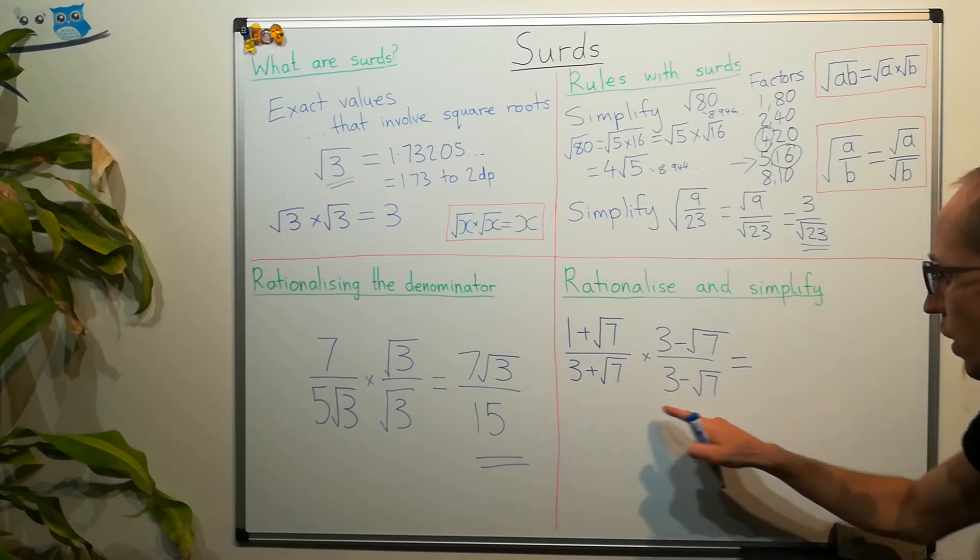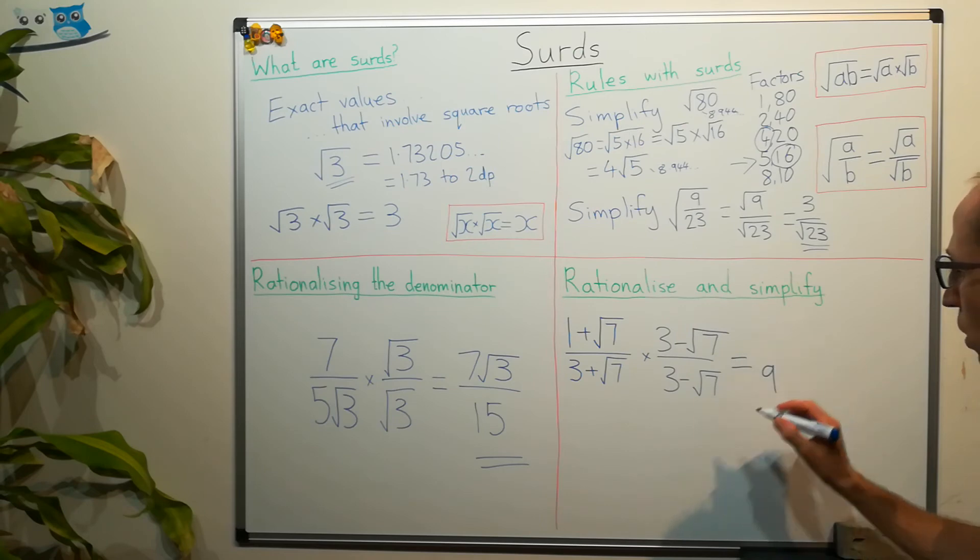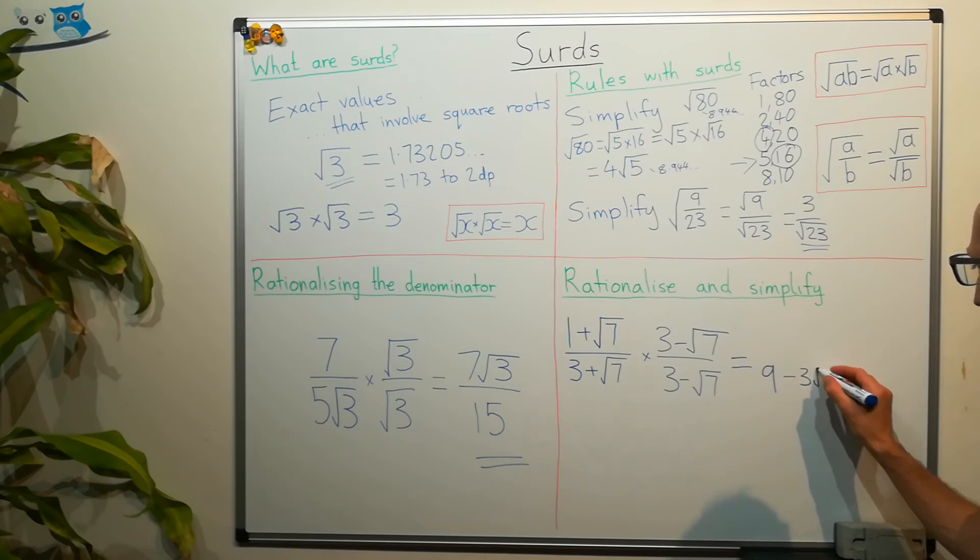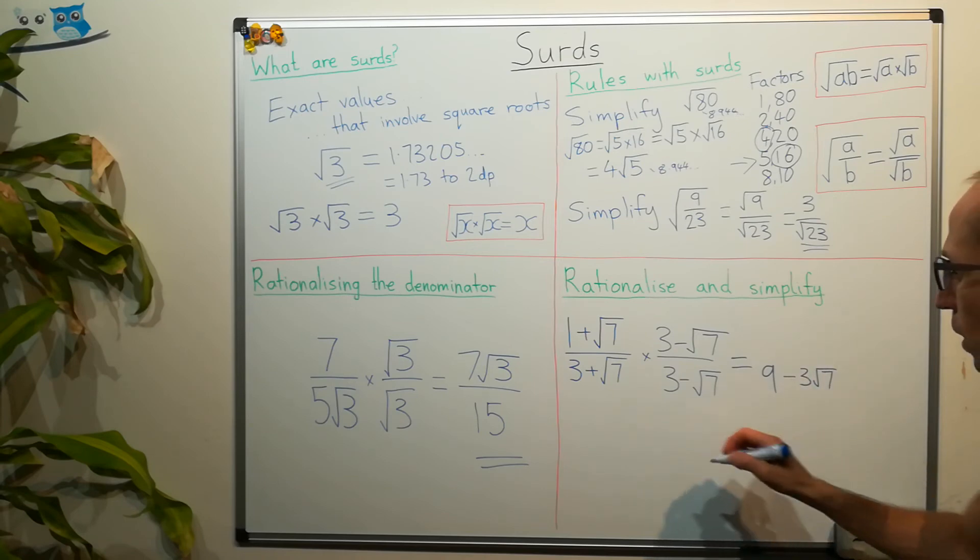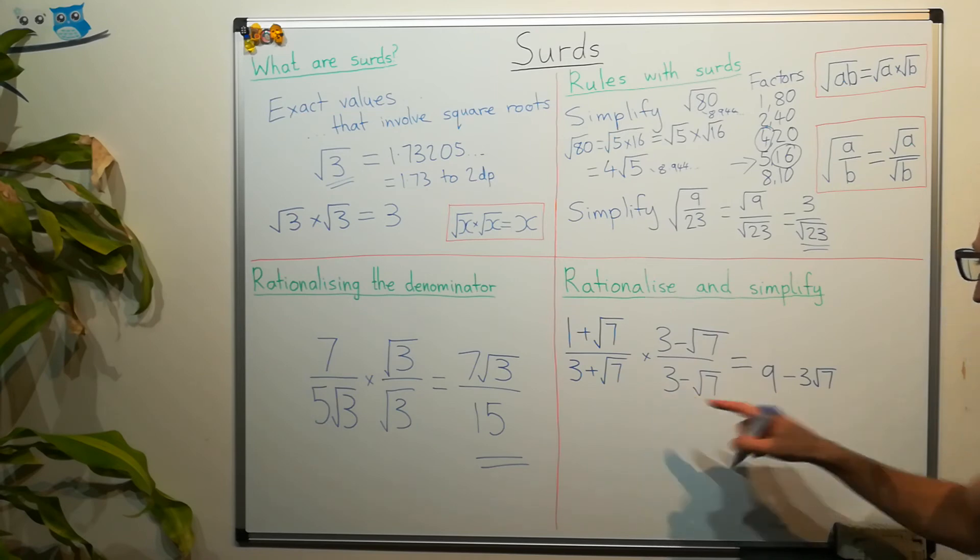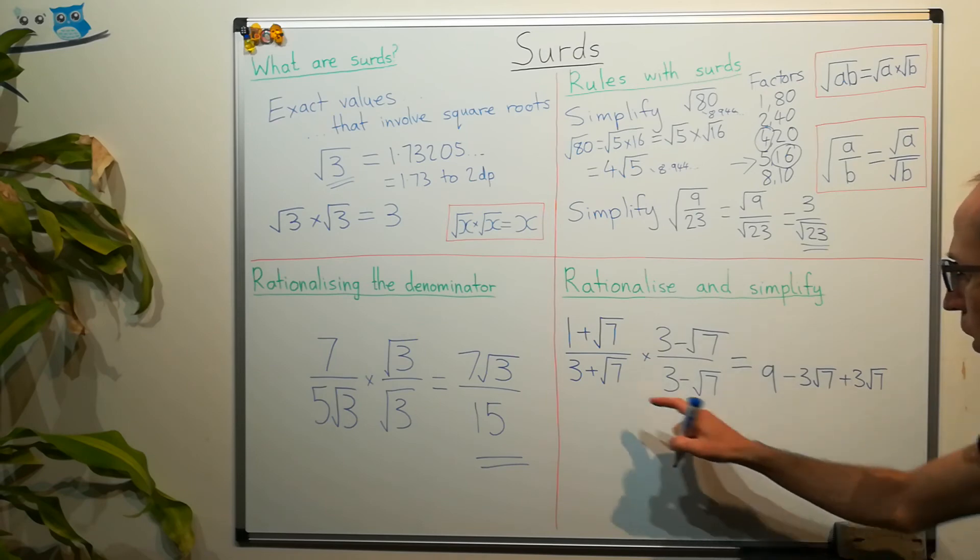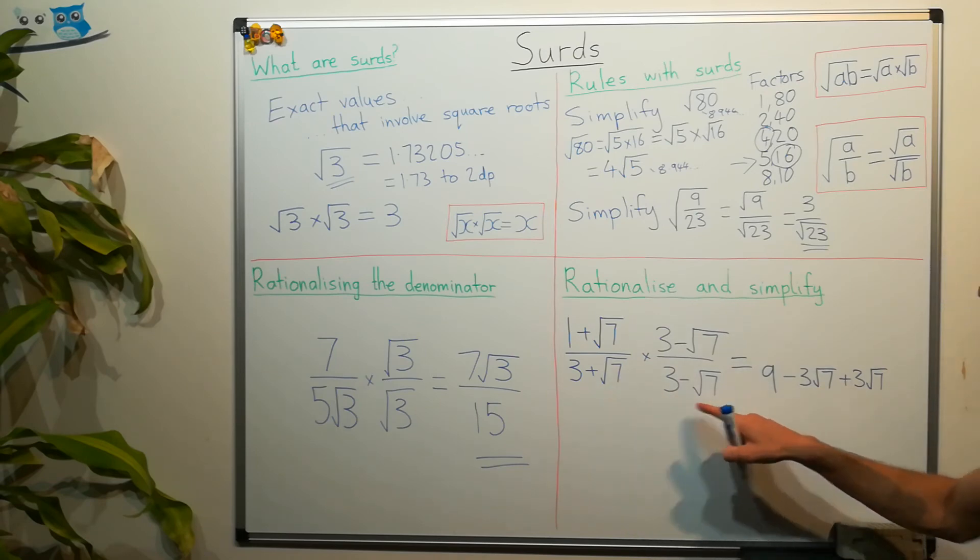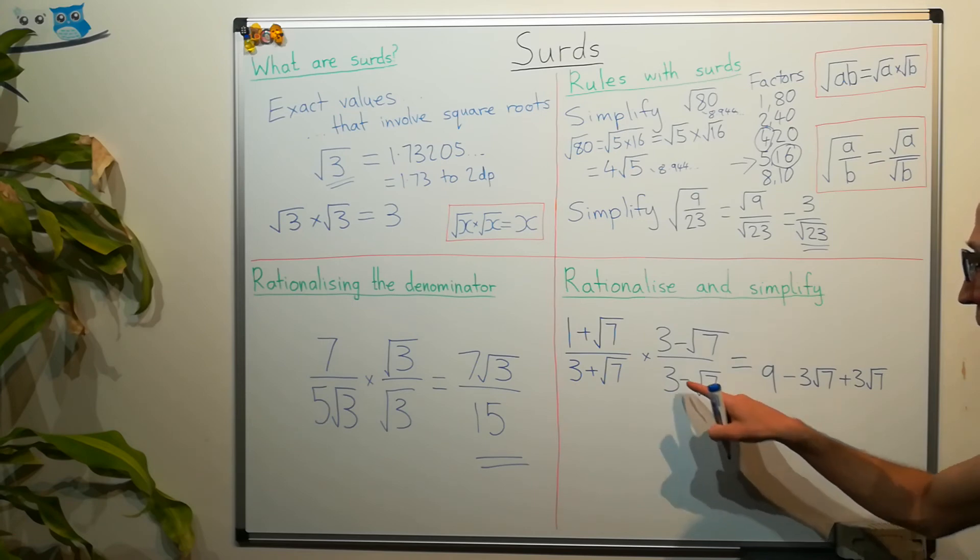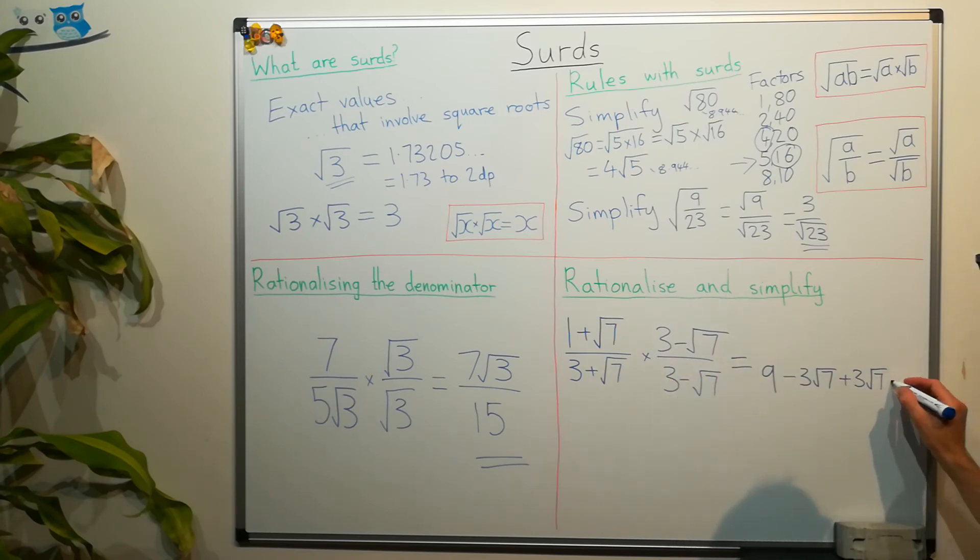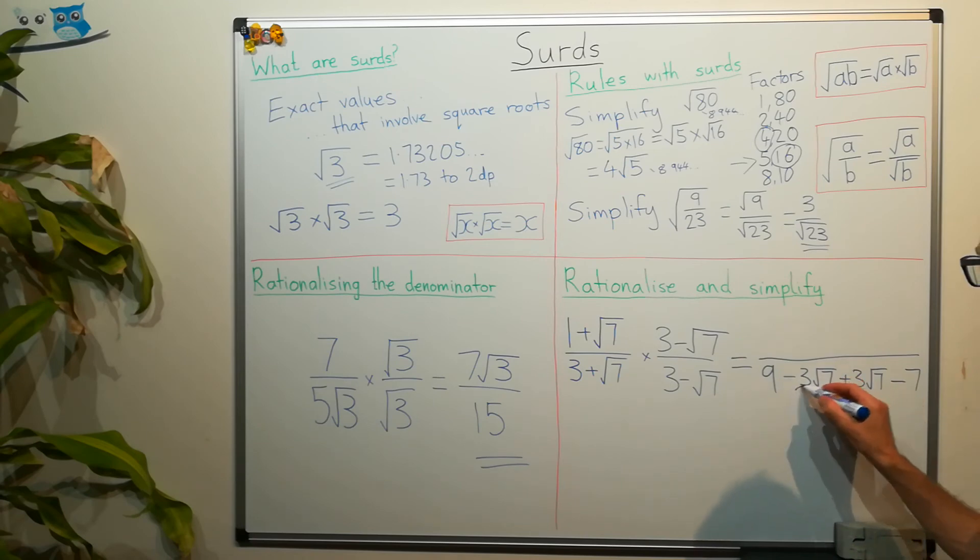we're going to have 3 times 3, which is 9. 3 times minus root 7 is minus 3 root 7. Root 7 times positive 3, so it's plus 3 root 7. And then we're left with root 7 times minus root 7. Well, root 7 times root 7 is 7. Minus and a plus, it's going to stay as minus 7. And what we see is that we've got minus 3 root 7 plus 3 root 7. So, these two are going to cancel each other out.